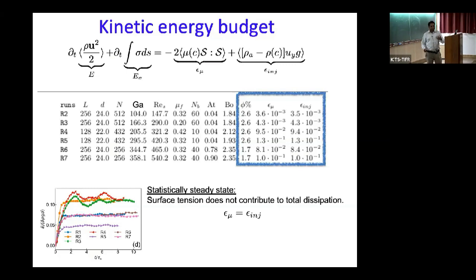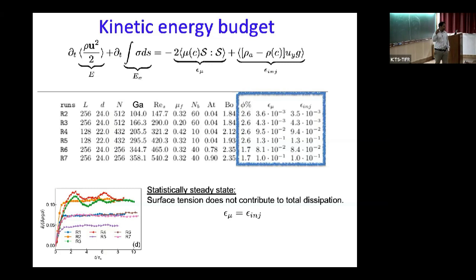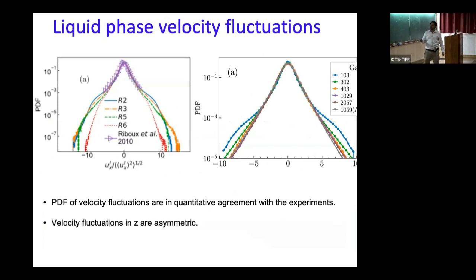Now, what is the kinetic energy balance? In the steady state: rate of change of kinetic energy plus rate of change of surface energy equals viscous dissipation plus injection. In steady state both time-derivative terms go to zero, which should appear clearly in the scale-by-scale energy budget at the largest filtering scale. We verify the balance is nicely satisfied and indeed obtain a statistically steady state, so we can now ask about the statistics and spectrum.